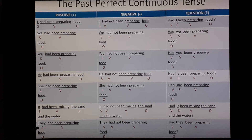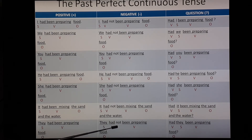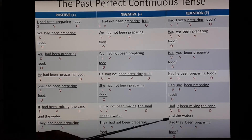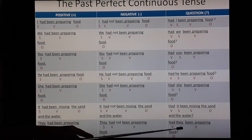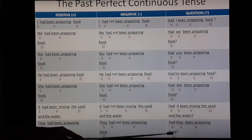Third person plural: They. 'They had been preparing food.' 'They' is subject, 'had been preparing' is verb or predicate, and 'food' is the object. Negative: 'They had not been preparing food.' 'They' is subject, 'had' is verb, 'not' is given because it's a negative sentence, 'been preparing' is verb, and 'food' is the object. Question form: 'Had they been preparing food?' 'Had' is verb, 'they' is subject, 'been preparing' is verb, and 'food' is object, then put a question mark.